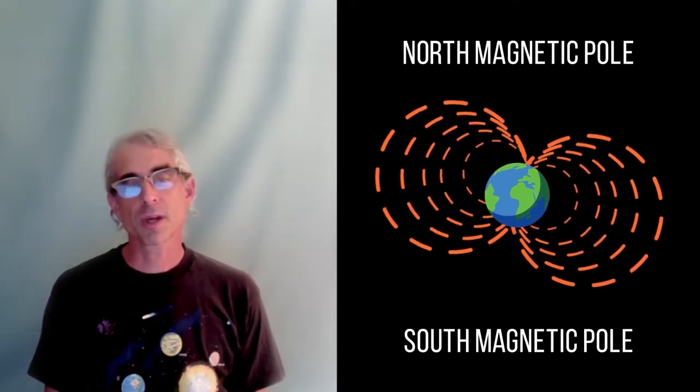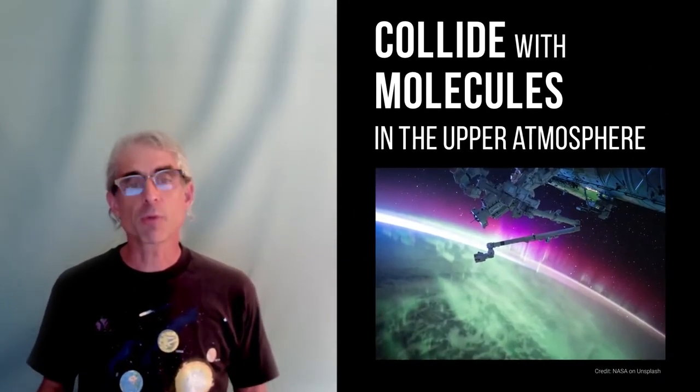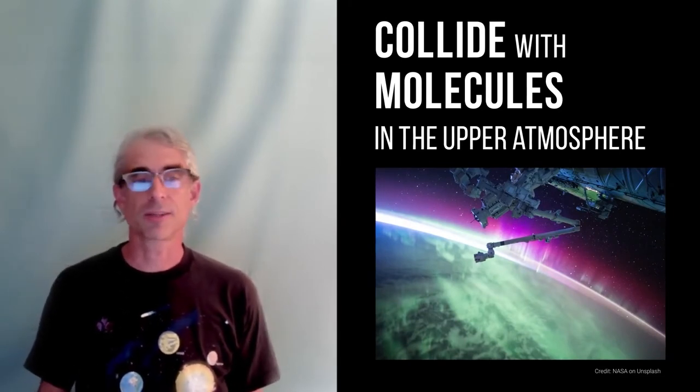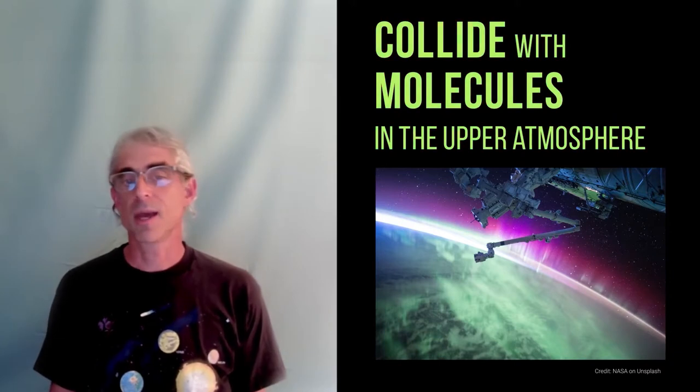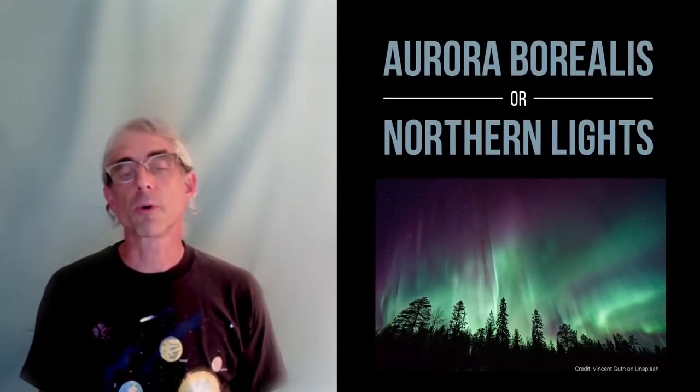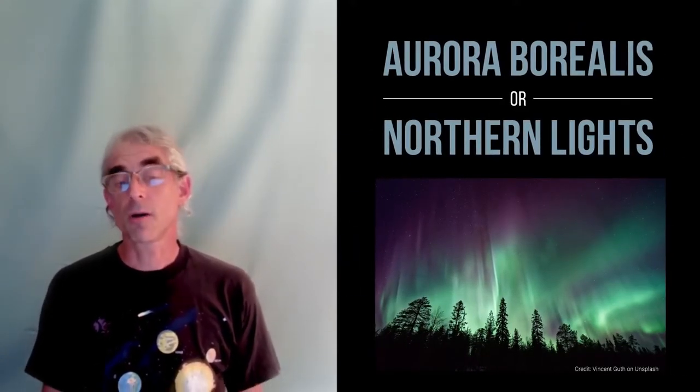There they collide with molecules in the upper atmosphere, lighting up the night sky with dancing colors: pinks, greens, yellows, blues, violets, and oranges. If you travel to northern places like Alaska or Canada, you may get to see the aurora borealis, also called the northern lights.